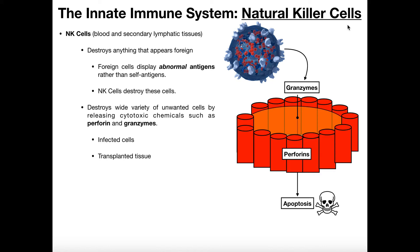Natural killer cells are a type of lymphocyte. There are three major types of lymphocytes we're going to encounter. First is the natural killer cell, which is part of the innate immune system. The other two are called B cells and T cells, or B lymphocytes and T lymphocytes. These are not part of the innate immune system — they're part of the adaptive immune system and will be discussed later. Natural killer cells are part of the innate immune system but they are derived from lymphocytes.